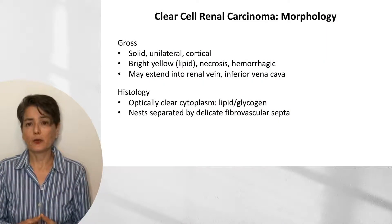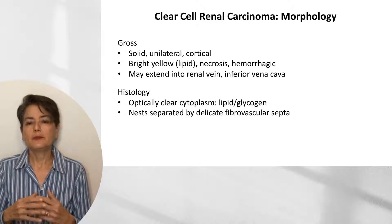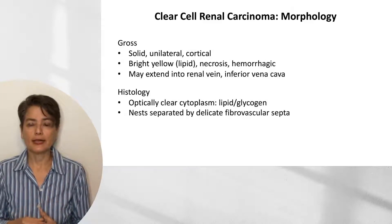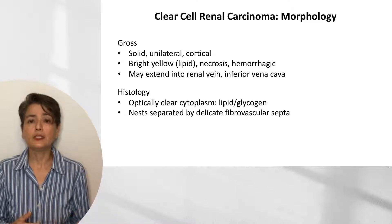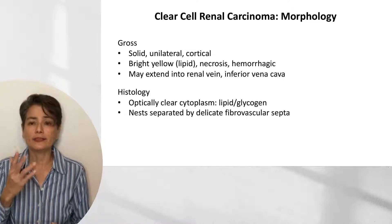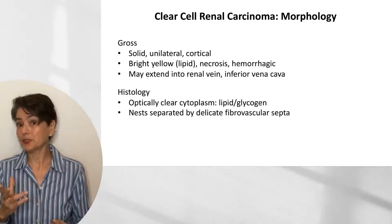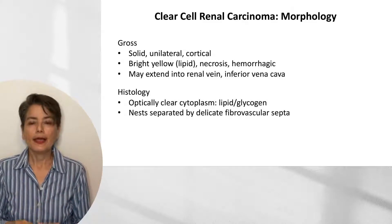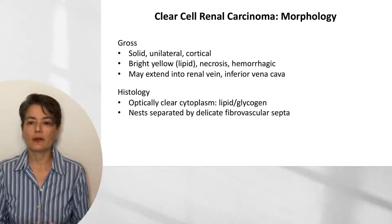What does clear cell renal cell carcinoma look like? Grossly, it's solid, unilateral, and cortical. It tends to be bright yellow due to high lipid content and can show necrosis and hemorrhage. These tumors have a tendency to invade the renal vein and inferior vena cava. Histologically, they are called clear cells because of their optically clear cytoplasm containing lipid and glycogen, arranged in nests separated by delicate fibrovascular septa.